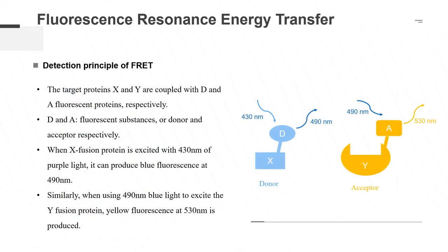FRET is a physical process to detect the interaction between molecules. This method is suitable for verifying the existence of known molecular interactions under normal physiological conditions of cells. X and Y proteins are fused with donor (D) and acceptor (A) fluorescent proteins, respectively. D and A are a pair of fluorescent substances called donor and acceptor. When the X-fusion protein is excited with 430 nanometer purple light, it can produce blue fluorescence at 490 nanometers. Similarly, when 490 nanometer blue light is used to excite the Y fusion protein, it can produce yellow fluorescence at 530 nanometers.